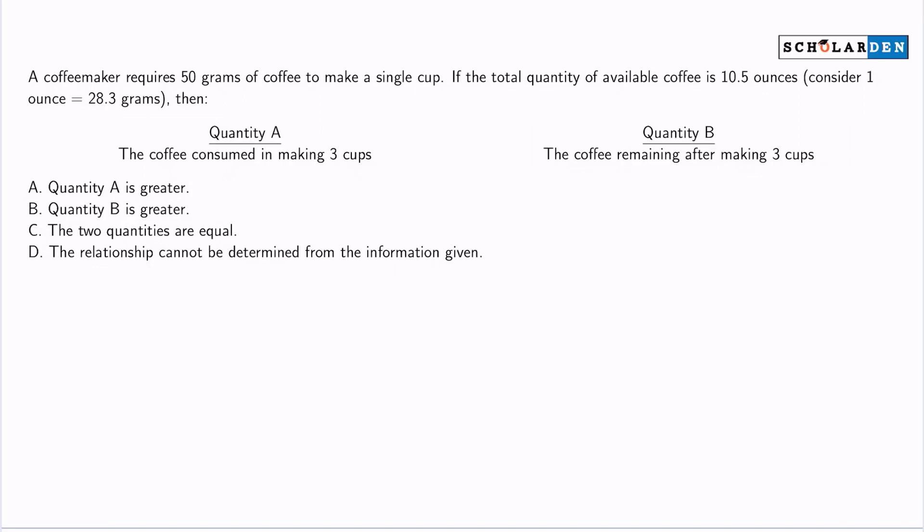A coffee maker requires 50 grams of coffee to make a single cup. If the total quantity of available coffee is 10.5 ounces, then for quantity A and B, we're asked to compare the relationship.